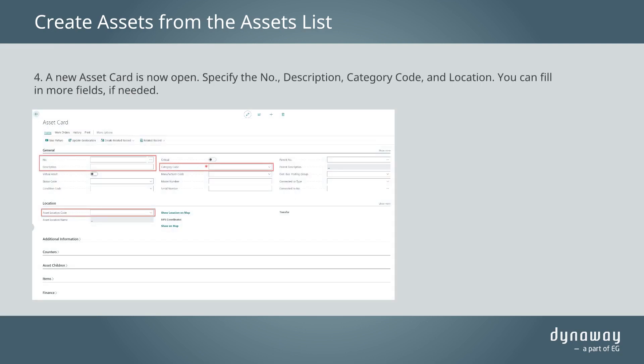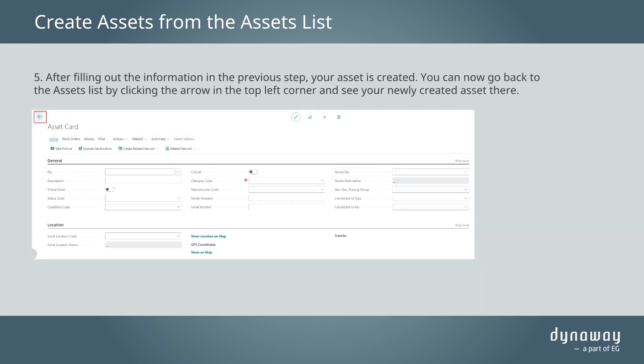Specify the number, description, category code, and location. You can fill in more fields if needed. After filling out the information in the previous step, your asset is created.